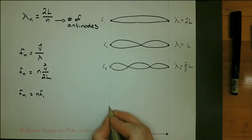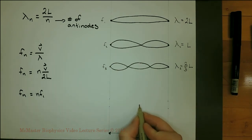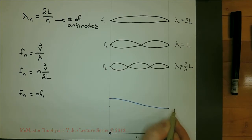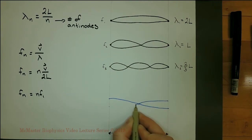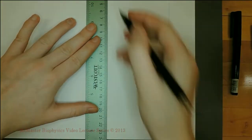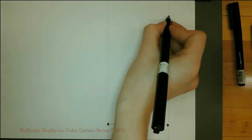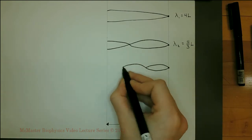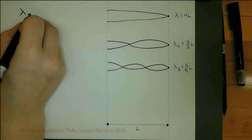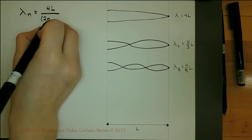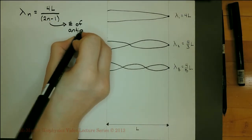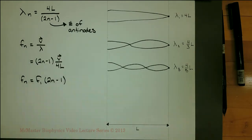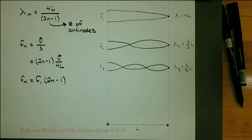A tube open at both ends uses the same equation, but the diagram has an antinode at each end rather than a node, and n is now the number of nodes rather than the number of antinodes. For a standing wave to be created on a string with one fixed and one free end, there must be a node at one end and an antinode at the other. From this, we can determine that the wavelength must be equal to 4L over (2n minus 1), where n is the number of antinodes. Frequency can be calculated by dividing the wave velocity by the wavelength.